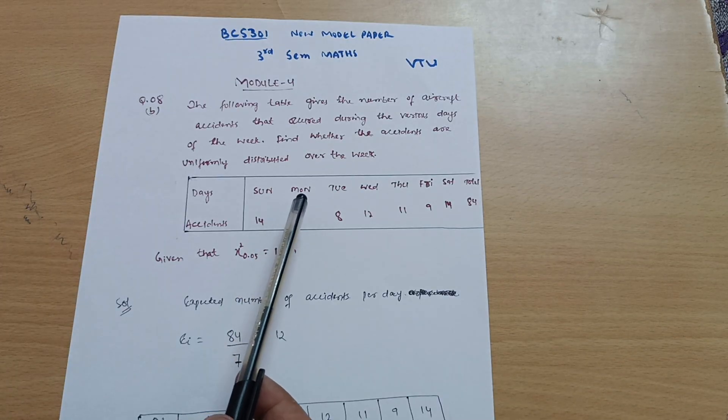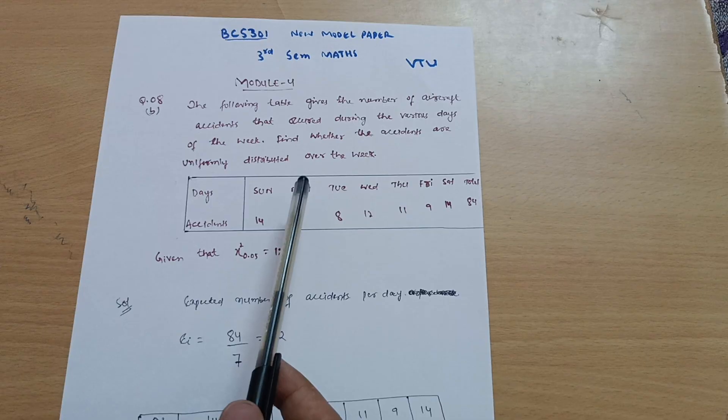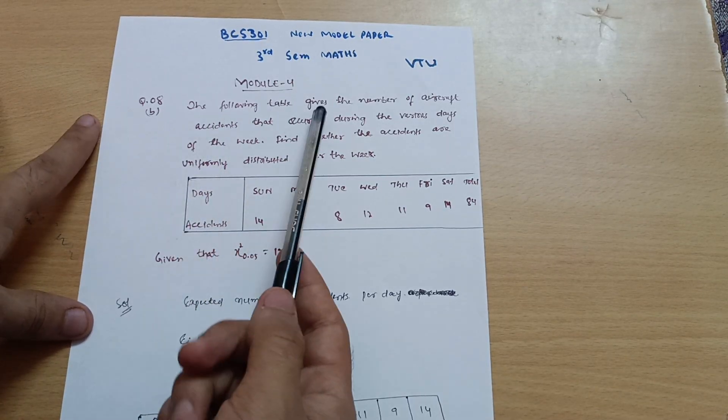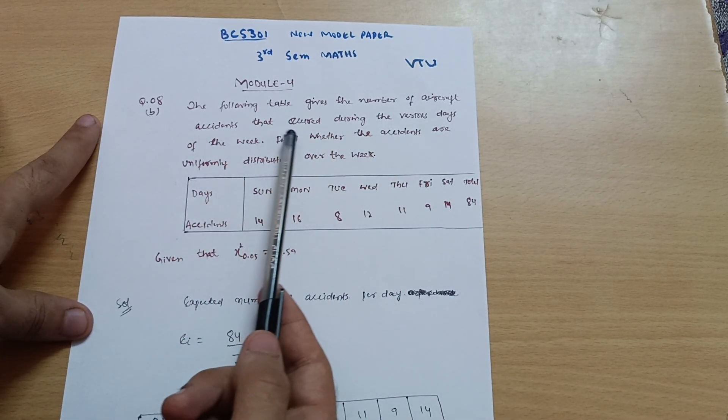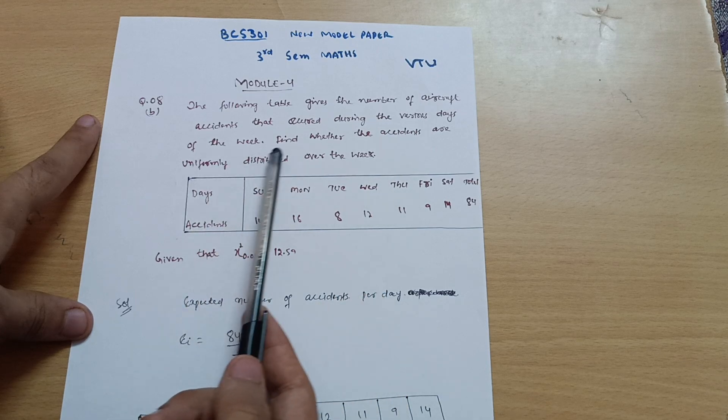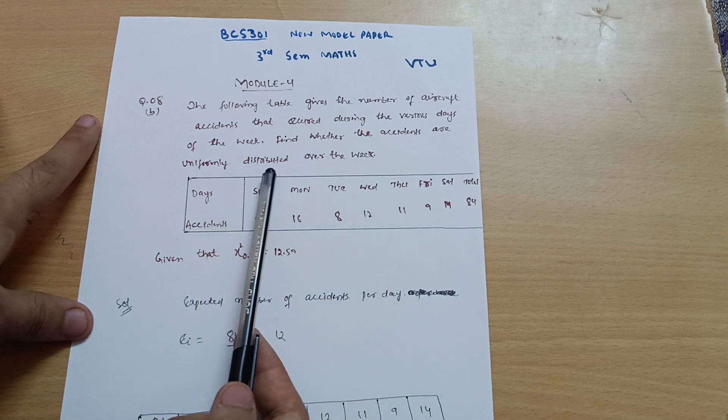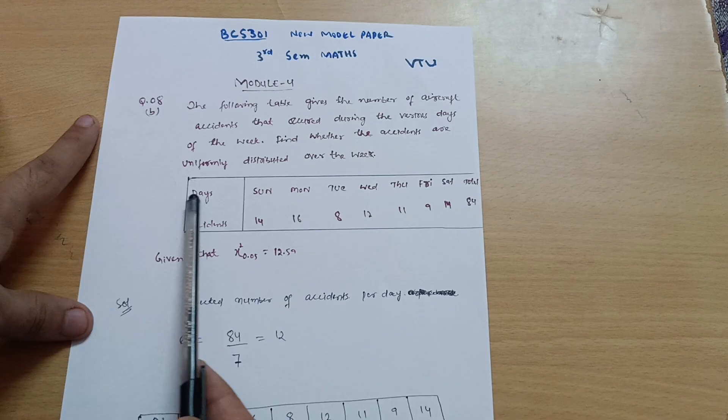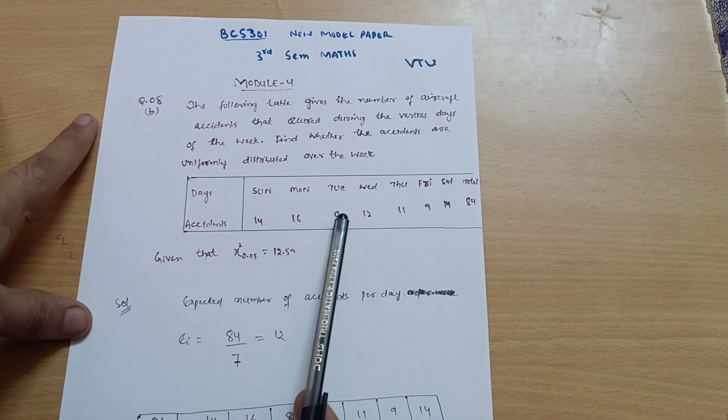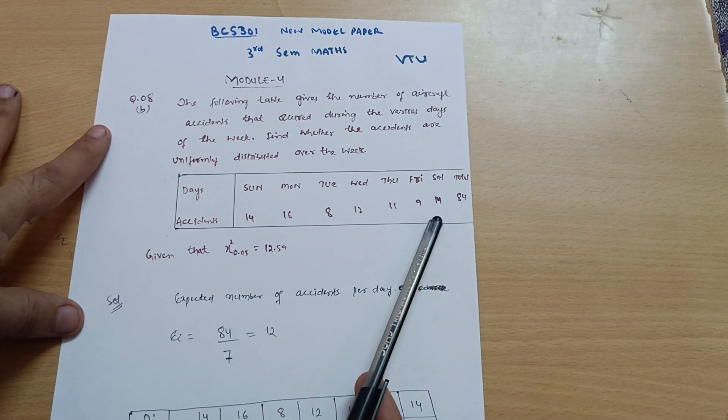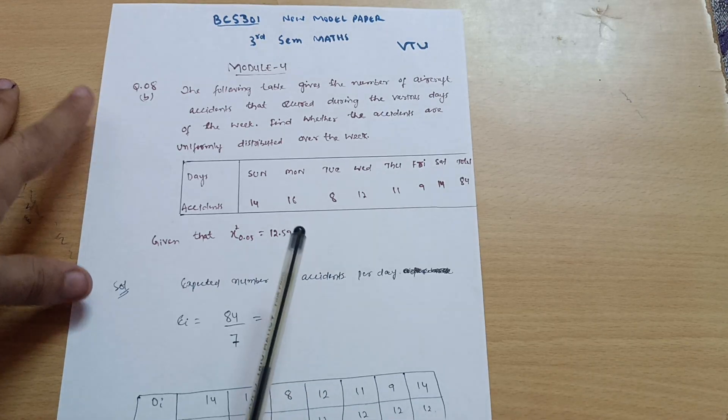If you have not watched it yet, the playlist link is in the description box. You can watch the chi-square distribution problems there in detail. The following table gives the number of aircraft accidents that occurred during the various days of the week. Find whether the accidents are uniformly distributed over the week. The days are given, the accidents are given, and the total number of accidents are given.